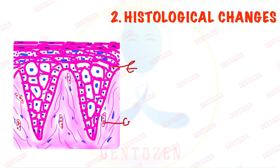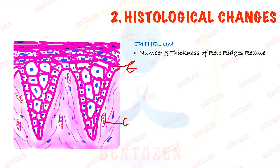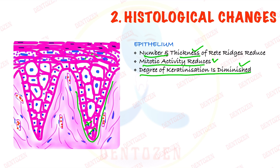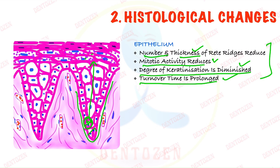Now for the histological changes, let's first look at the epithelium. The number and thickness of rete ridges reduce — rete ridges are the projections of the epithelium into the connective tissue. Mitotic activity, that is the cell proliferation rate, also decreases. The degree of keratinization — the amount of keratin formation — is also reduced, and the turnover time is prolonged, meaning the cell moves more slowly from the basal layer to the top layer.